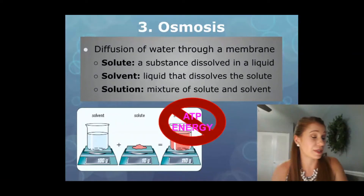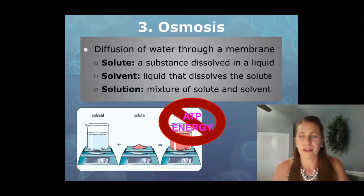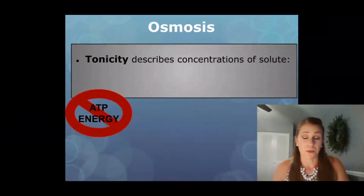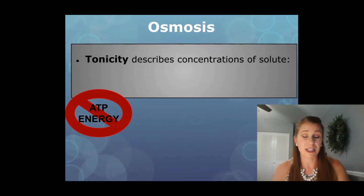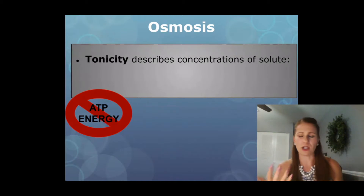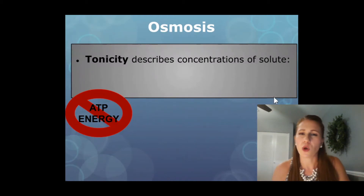No ATP energy is involved in osmosis. Next we're going to go over how different cells react in different environments and how osmosis occurs — this is the part where it can get pretty confusing. So: tonicity. This describes the concentrations of solutes. Tonicities are incredibly simple, but they can get confusing because it almost involves a math-like comparison.